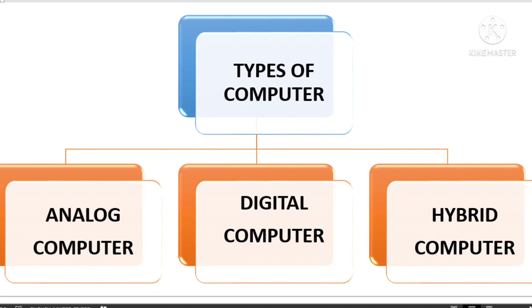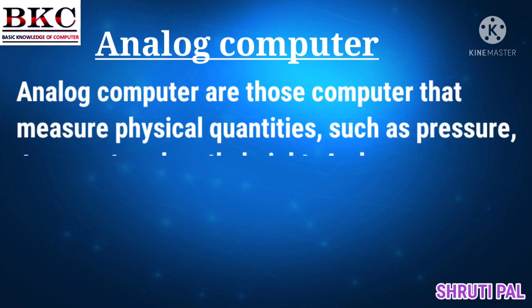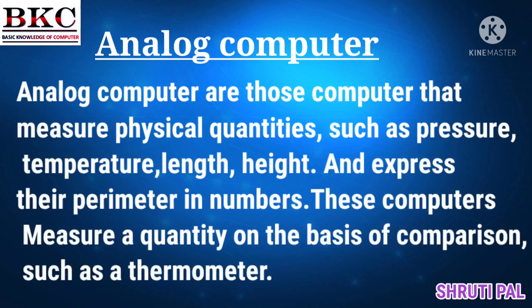Second, digital computer, and third, hybrid computer. Analog computers are those computers that measure physical quantities such as pressure, temperature, length, and height, and express their parameters in numbers. Yani analog computer physical quantities ko measure karte hain.